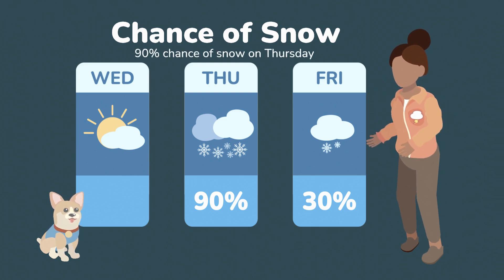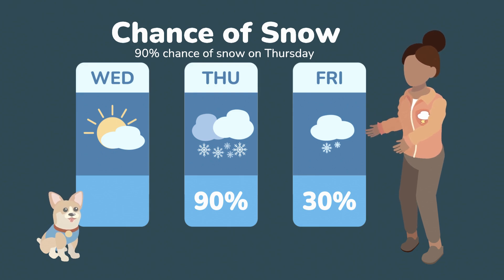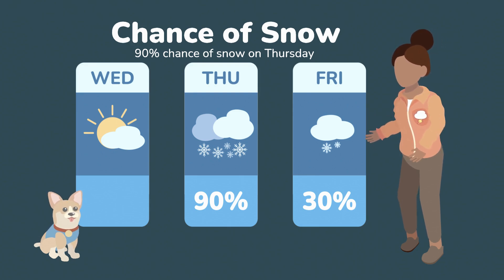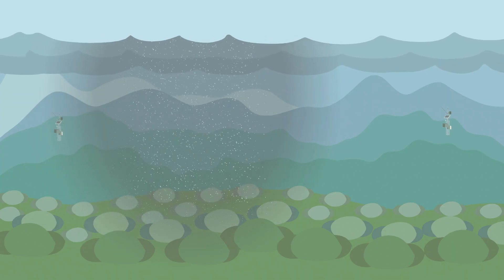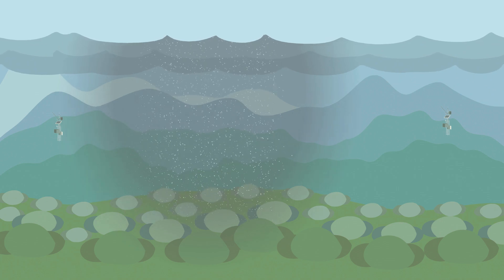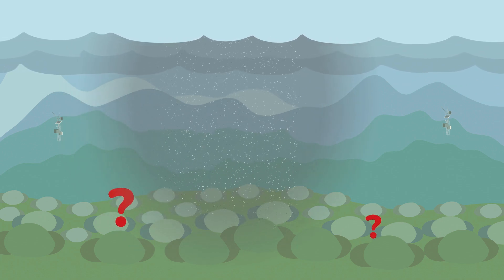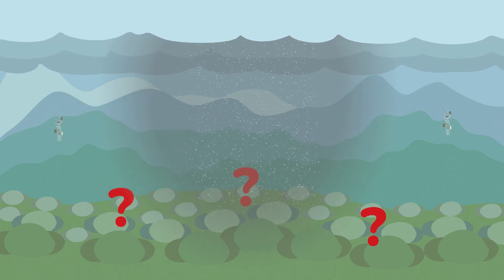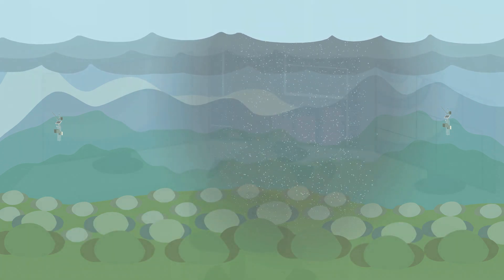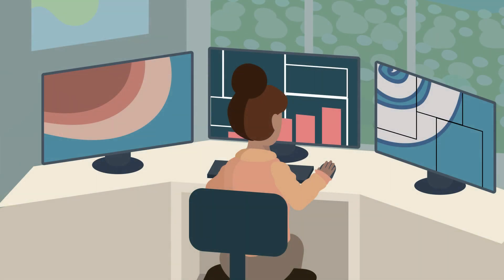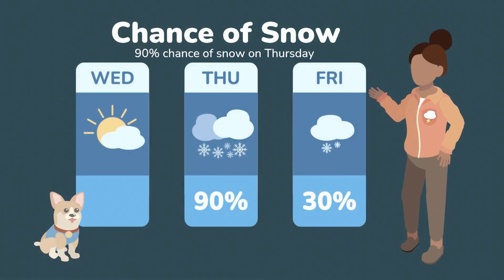The forecast you might be used to seeing gives a single number or small range — for example, one inch of snow. But even with the best technology, nature is not that predictable, and our technology can't observe all the current weather accurately everywhere all at once. Because of that, there's always a range of possible outcomes when we are forecasting weather in the future. New technology now allows us to give you better information by including the chances for different amounts of rain or snow.